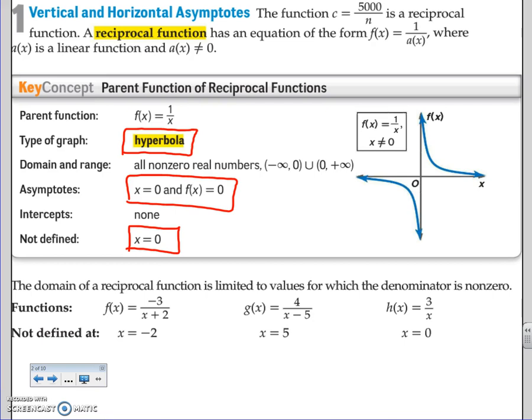To find the domain, it's limited for the values where the denominator is nonzero. Remember, you cannot divide by zero. So this is the same as our restrictions. If this is our bottom and we don't want zero, x can't be negative two.